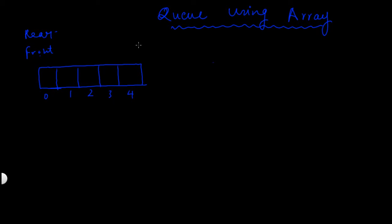A queue is a linear data structure in which elements can only be inserted from the rear end of the queue and elements can only be deleted from the front end of the queue.